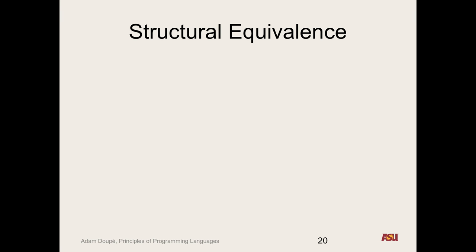We've looked at various types of type systems. We looked at type name equivalence, which specifies that for two types to be equivalent, they must have exactly the same name. So if we define a new type, even if that type is the same as a basic type, because that new type no longer has the same name, it is not name equivalent. We saw an interesting case with anonymous types — a type with no name — where even two variables with the same anonymous type will not be name equivalent.